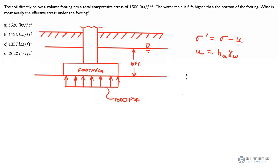Should be pretty straightforward. So we know our total stress is our 1,500 PSF and we know the depth of our water is six feet. And I think we can figure out what gamma sub w is for the unit weight of water.